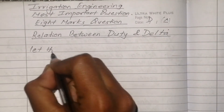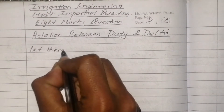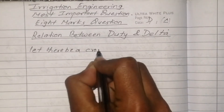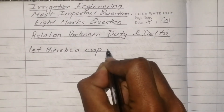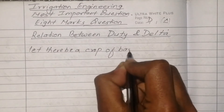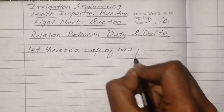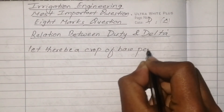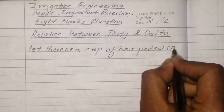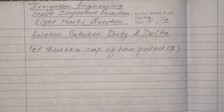Let us derive the relation. Let a crop have a base period of B days. We assume the base period is B.